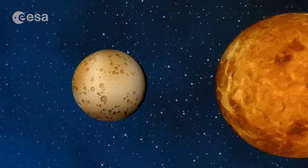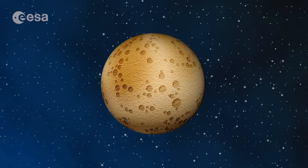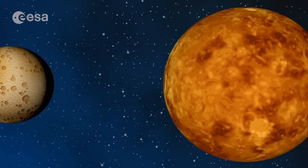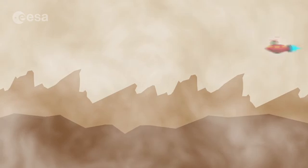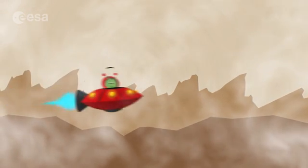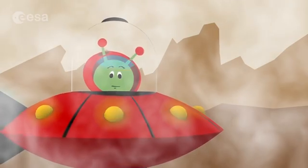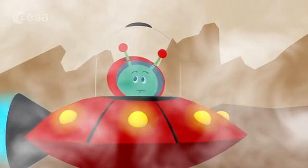Mercury is very close to the sun, and it is the smallest planet of the solar system. Venus is very hot. It has a thick and dense air, poisonous to humans. I better keep my helmet tight, since this air is poisonous for me too.